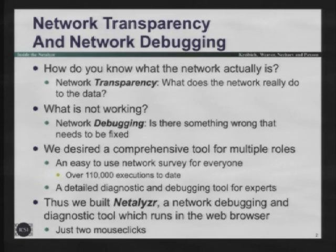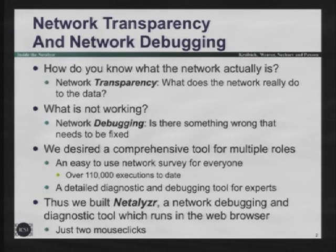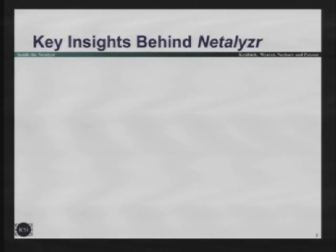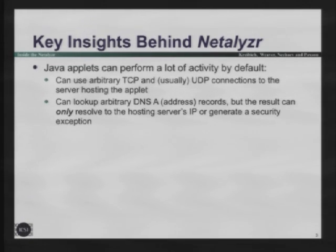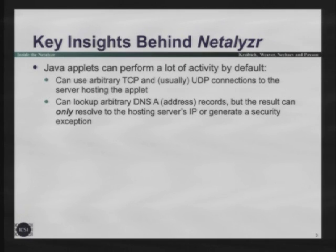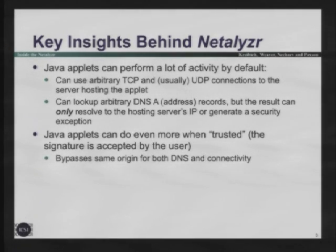The problem is network transparency and network debugging. We wanted something we could run ourselves whenever we get to an oddball hotel network - we know the Internet is broken, but we'd like to know how it's broken. It's all in Java and JavaScript, within the same origin policy. You can do arbitrary TCP and most of the time UDP, and you can look up arbitrary DNS records, but it will only return either the host or a security exception.